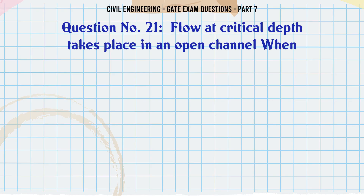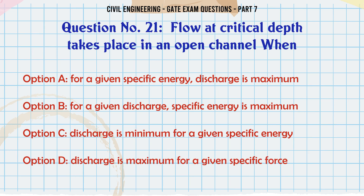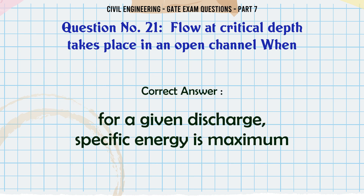Flow at critical depth takes place in an open channel when: A) for a given specific energy, discharge is maximum; B) for a given discharge, specific energy is maximum; C) discharge is minimum for a given specific energy; D) discharge is maximum for a given specific force. The correct answer is: for a given specific energy, discharge is maximum.